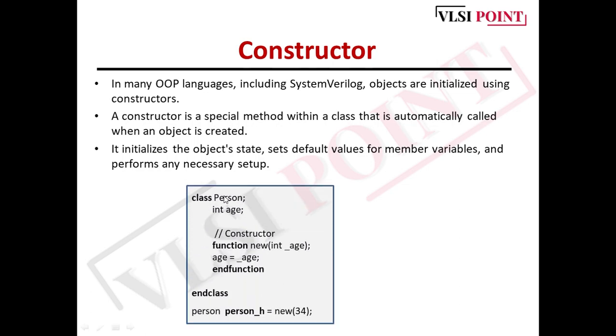We can see the example of constructor here. Class, then the class name. This is the class property age, which is of integer type. Then we've written the constructor: function new int type age, and then age equals underscore age endfunction. Then person person_age equals new 34. Here this 34 is allocated to the property of the class, to this age. 34 is given to this and the memory location of this 34 will be stored in this handle person_age.